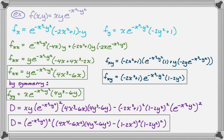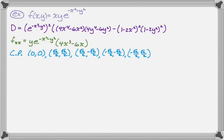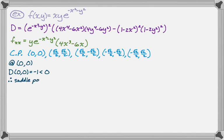Now let's evaluate. At (0,0): e to the zero is 1; the terms 4x⁴−6x² and 4y⁴−6y² are both zero, and (1−2·0)² = 1 for both. So D(0,0) = 0 − (1)(1) = −1. Since D < 0, this is a saddle point, and we're done with that one.